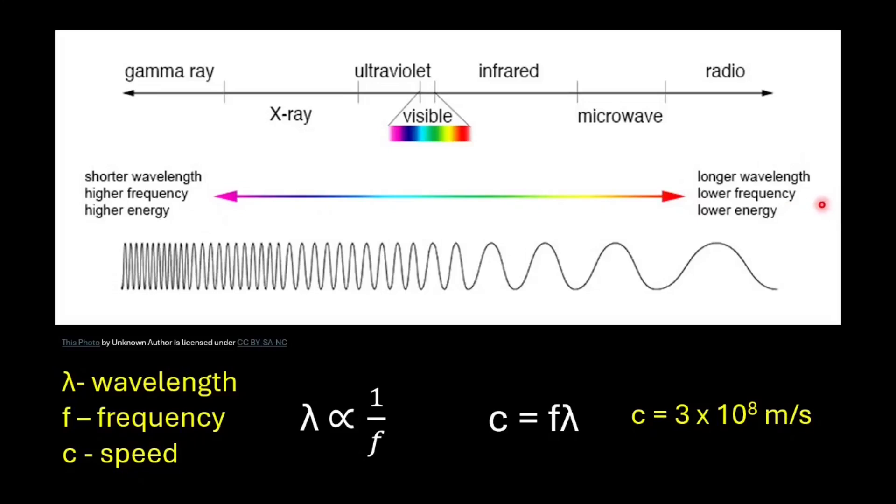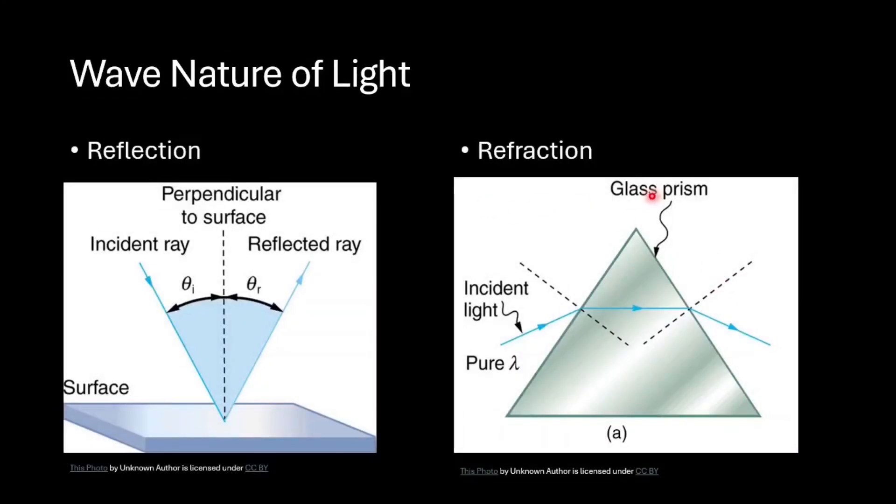All of these firmly reinforce the long-held belief in the wave nature of electromagnetic radiation. In addition, several experiments proved the wave nature of light such as reflection and refraction. However, conclusive evidence for wave nature is provided by interference and diffraction.